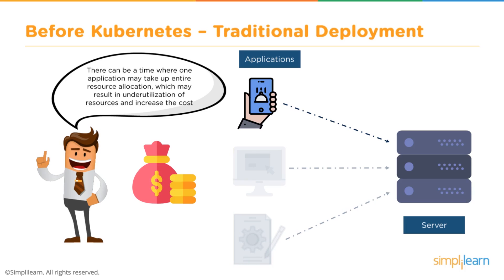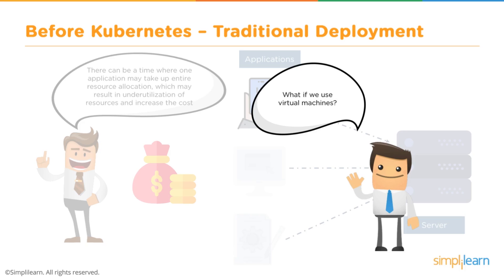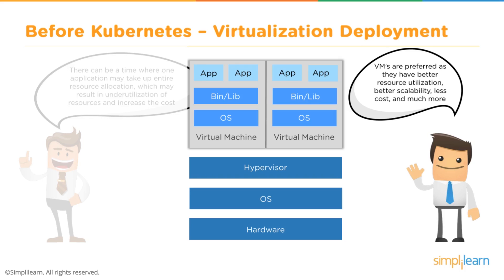The problem with this kind of infrastructure is that it gets very expensive. You can only install one piece of software and one service on one piece of hardware, so your hardware is being massively underutilized. This is where virtual machines have become really popular. With a virtual machine you're able to have better resource utilization and scalability at much less cost, and this allows you to run multiple virtual machines on a single piece of hardware.